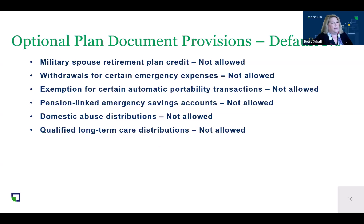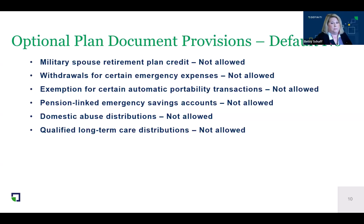Some other provisions we're not offering at the outset: SECURE 2.0 added a military spouse retirement plan credit — we are not permitting that. Withdrawals for certain emergency expenses — not offering that. Exemption for certain automatic portability transactions — not permitting that. Pension-linked emergency savings accounts, which would allow you to take some money out of your plan in emergencies — not part of our defaults. Domestic abuse distributions and qualified long-term care distributions are also not defaults we're going to permit, though you could override any of these.